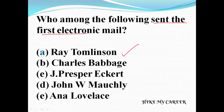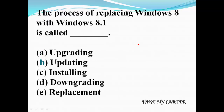Next question: the process of replacing Windows 8 with Windows 8.1 is called? A: Upgrading, B: Updating, C: Installing, D: Downgrading, E: Replacement. Answer is Updating — the process of replacing Windows 8 with Windows 8.1 is called updating.